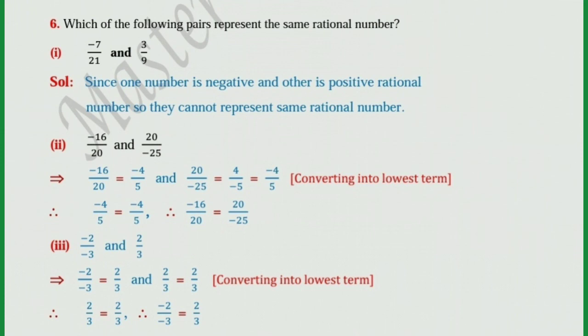Third pair: minus 2 upon minus 3 and 2 upon 3. Minus 2 upon minus 3 equals 2 upon 3 — just cancel the minus-minus sign. And 2 upon 3 equals 2 upon 3. Therefore, 2 upon 3 is equal to 2 upon 3, so minus 2 upon minus 3 is equal to 2 upon 3.